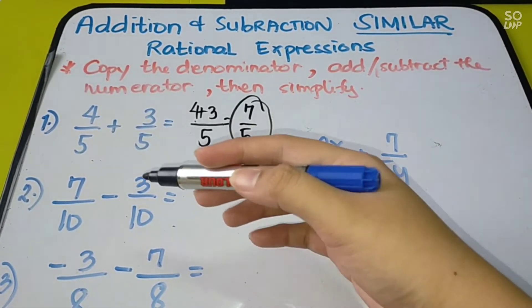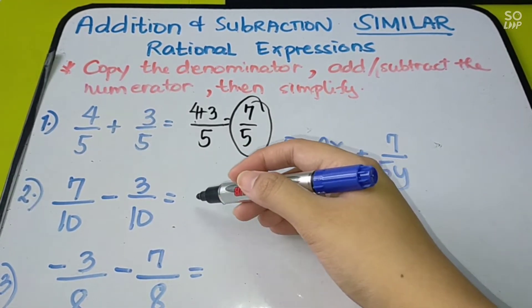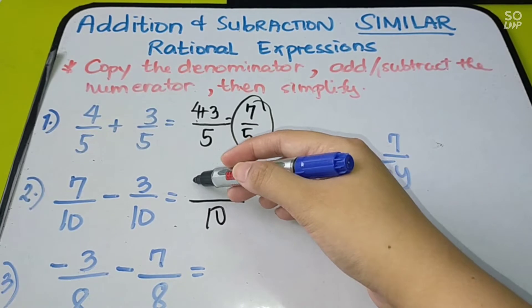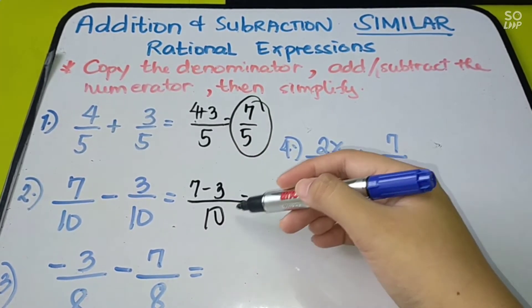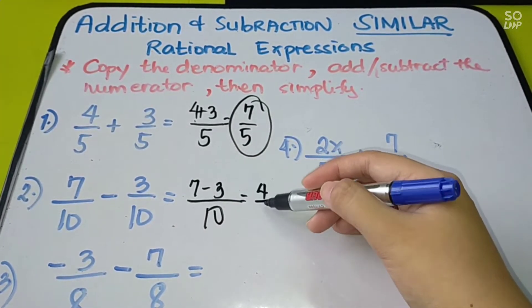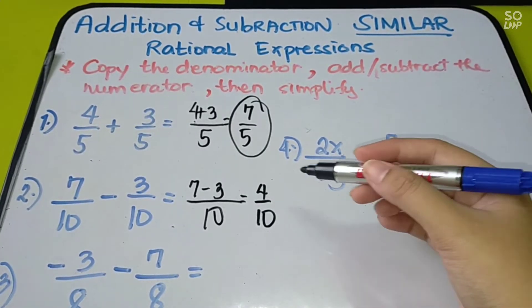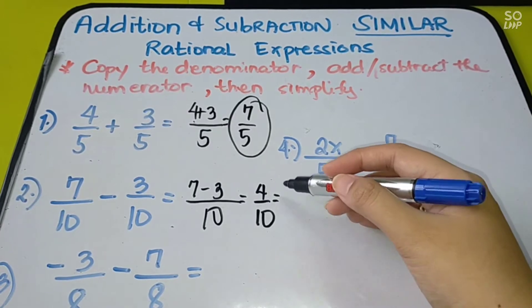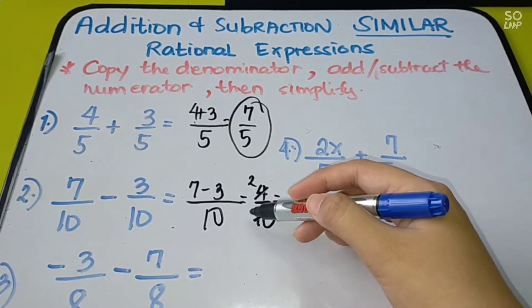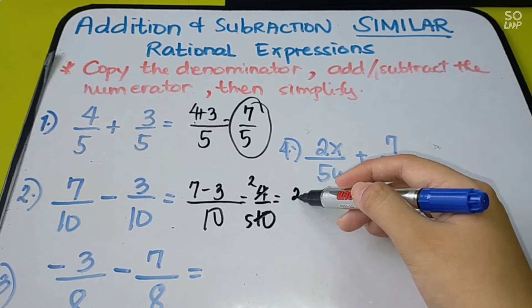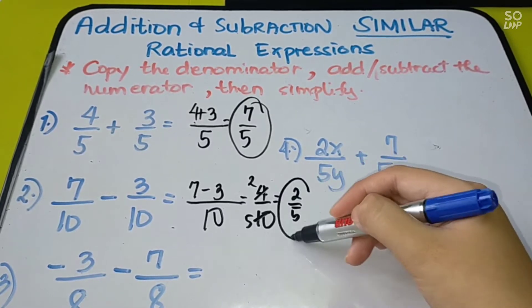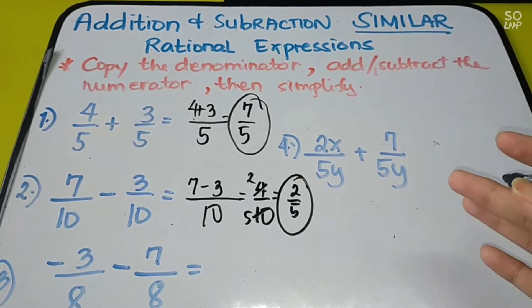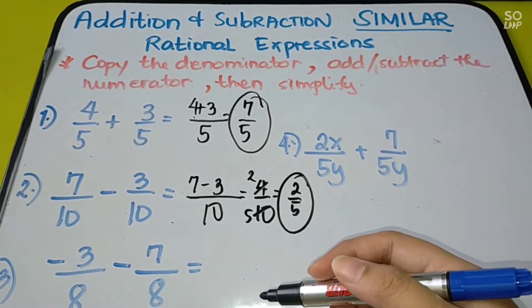Number 2, we have 7 over 10 minus 3 over 10. Copy the denominator 10, then we have 7 minus 3. The answer is 4 over 10. Since 4 over 10 are divisible by 2, we can still simplify. So 4 becomes 2 and 10 becomes 5. The answer is 2 over 5. Is it clear?